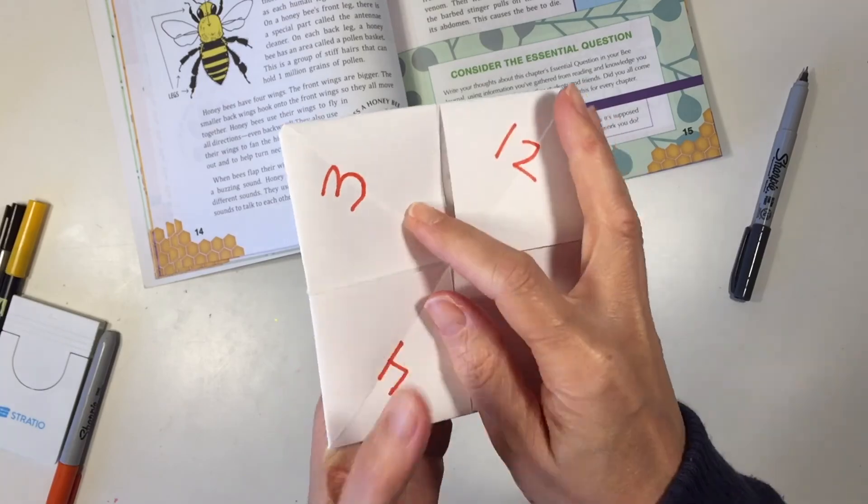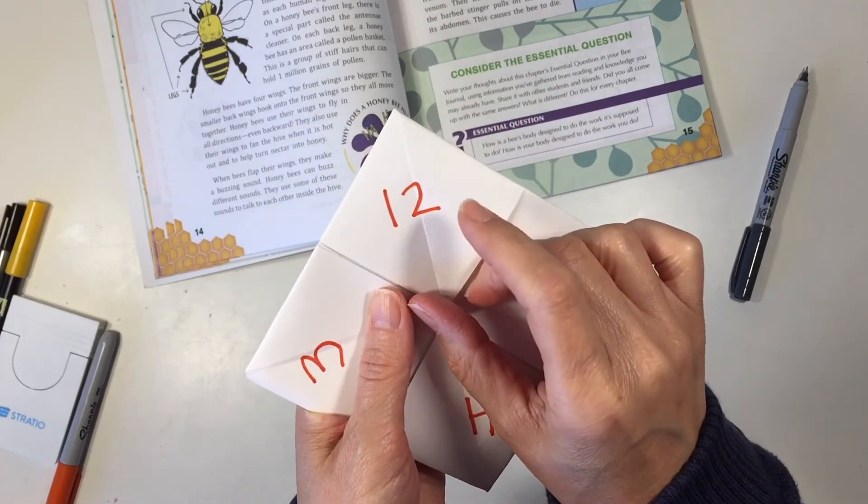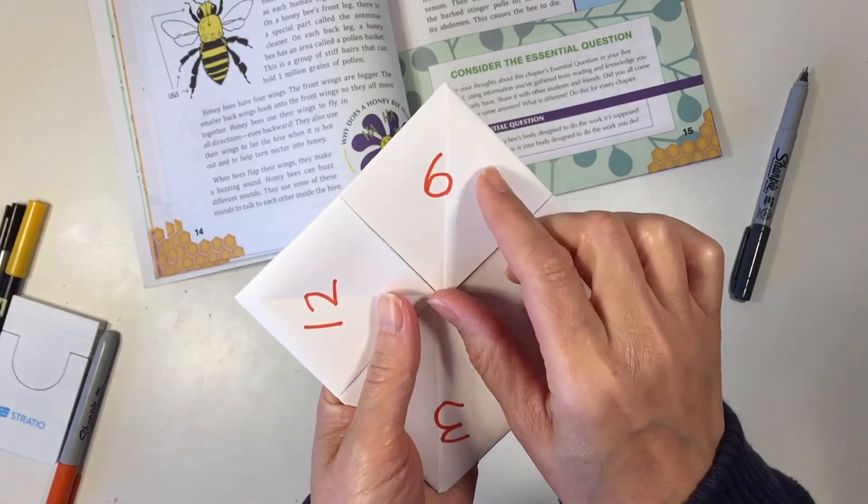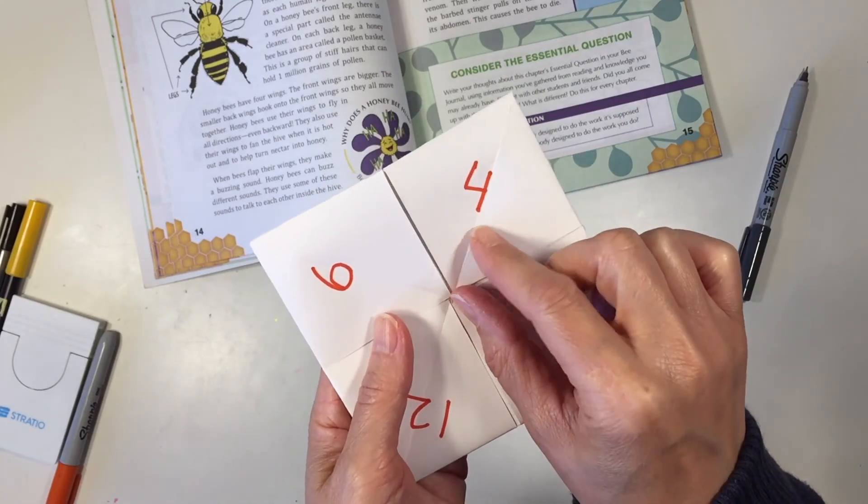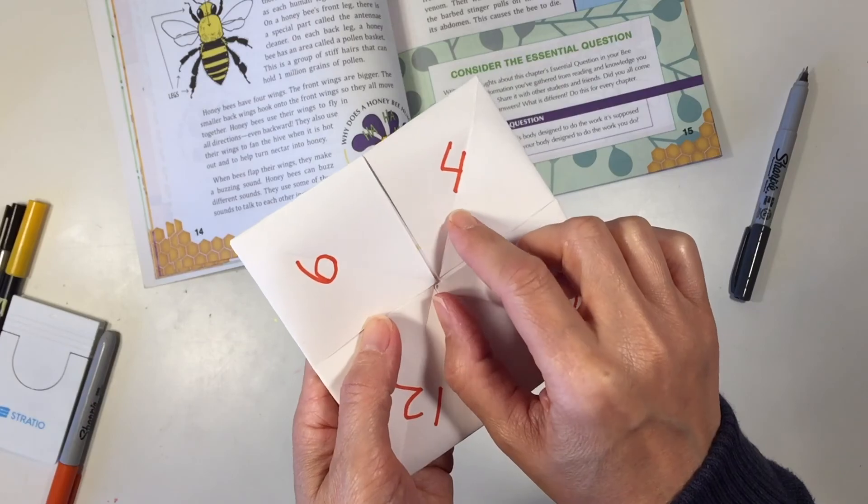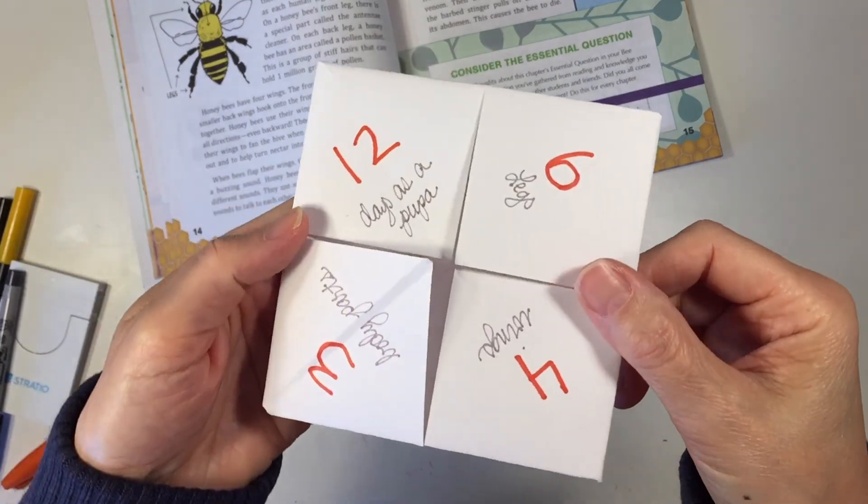The three is for the three different body parts. 12 is for the 12 days that it is a larva. 6 is for the six legs it has, and 4 is for the four wings that it has. Below I'm going to go ahead and write those down. And now it's complete.